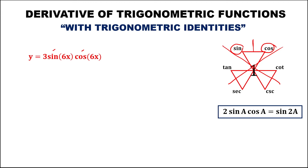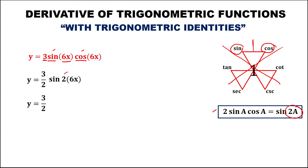However, we have the double angle identity for sine: 2 sine a times cosine a equals sine 2a. For the product of sine and cosine, using this identity, we divide the coefficient by 2 and multiply the angle by 2. This becomes sine 2 times 6x. Simplifying, y equals 3 over 2 times sine 12x.